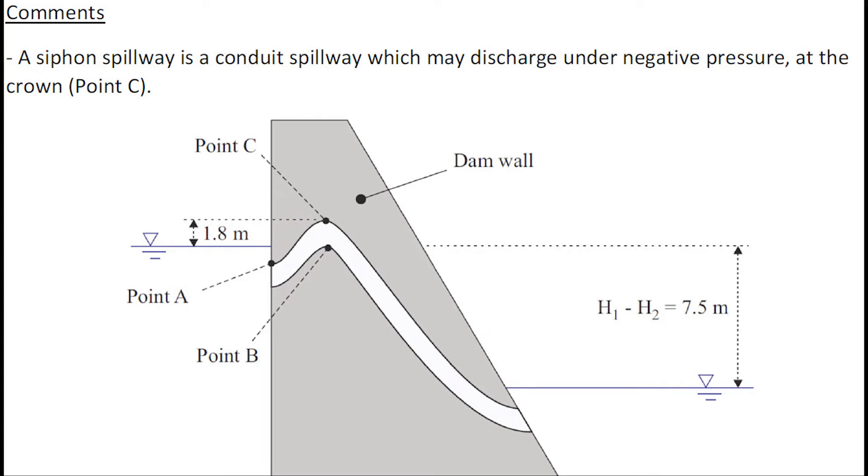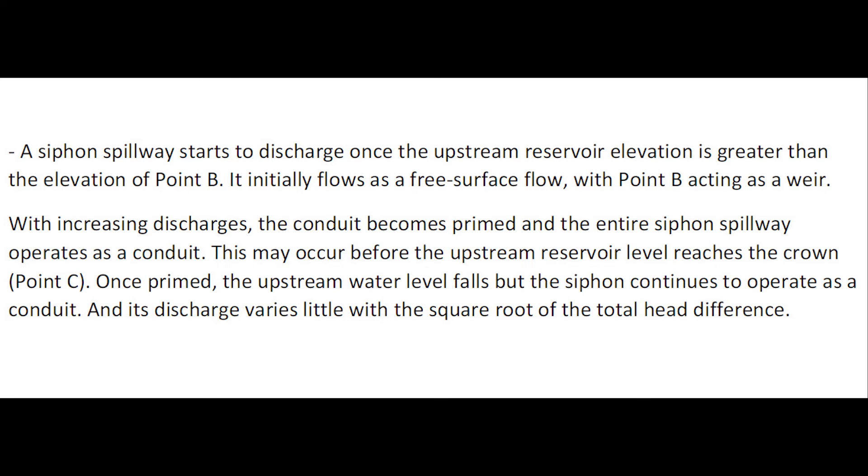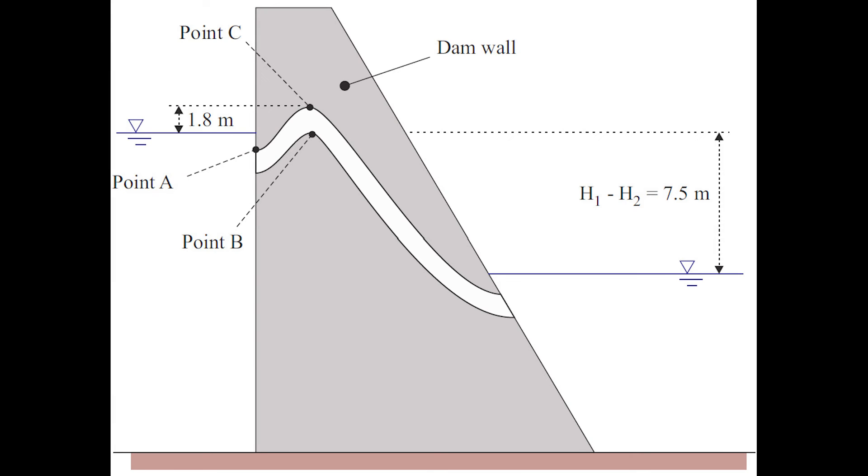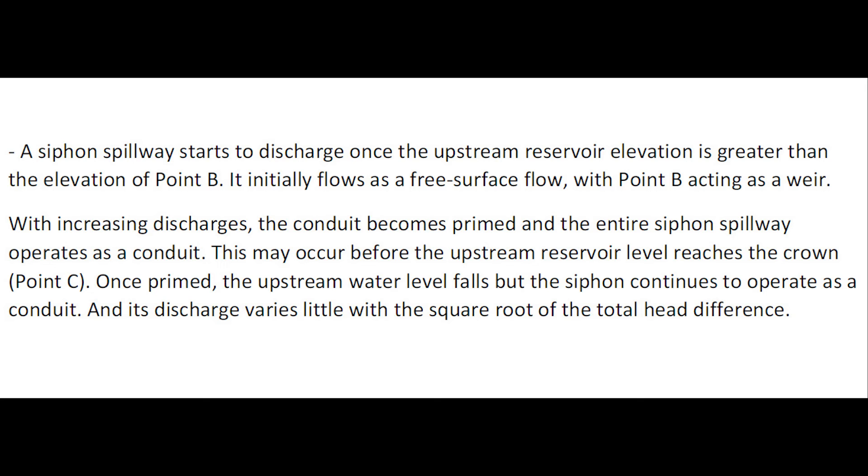The siphon spillway is a conduit spillway which may discharge under negative pressure at the crown. The siphon spillway starts to discharge once the upstream reservoir elevation is greater than the elevation of point B. With increasing discharge, the conduit will become primed and the entire siphon will operate under pressure.